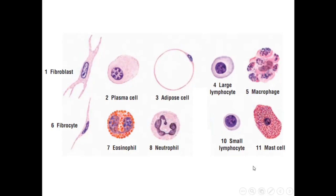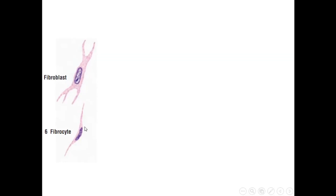A picture from different cell types in connective tissue shows fibroblasts, fibrocytes, plasma cells, adipocytes, large and small lymphocytes, macrophages, mast cells, neutrophils, and eosinophils. Starting with fibroblasts: these are the most common cells in connective tissue and we see them in two states — in the active form they are called fibroblasts, and in the inactive form they are called fibrocytes.